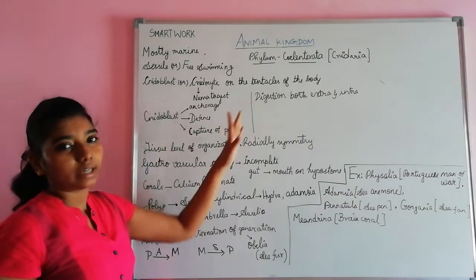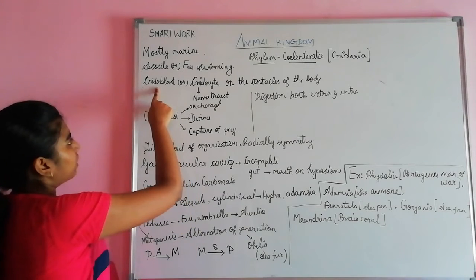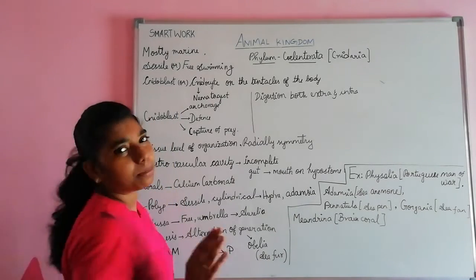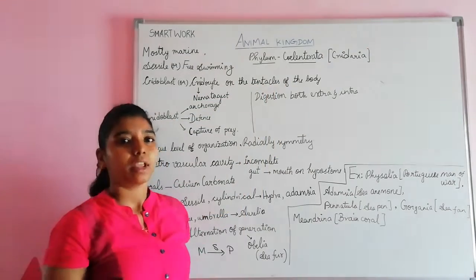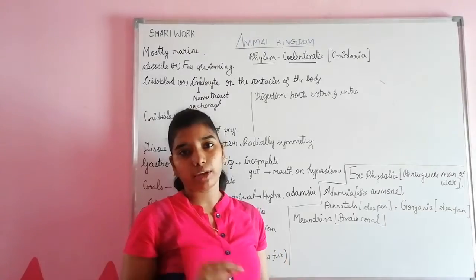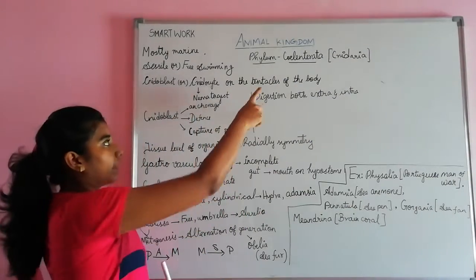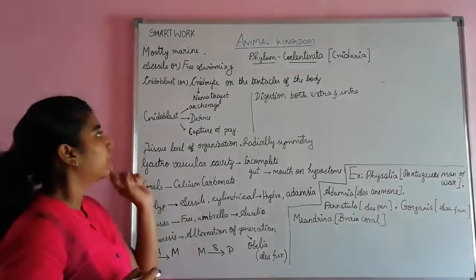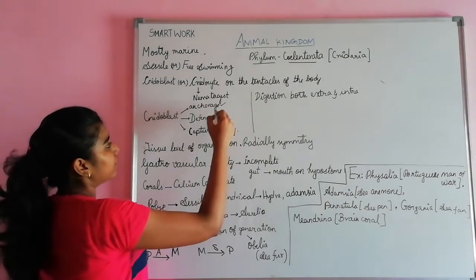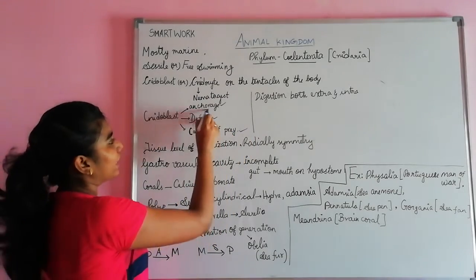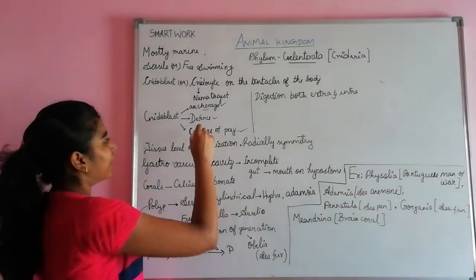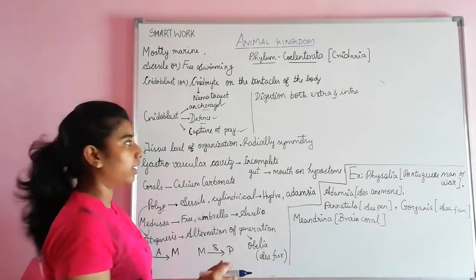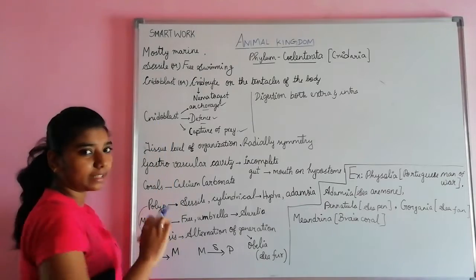Now we are going to see why they are called as Cnidaria. They have a specialized cell called cnidoblast, present on the tentacles of the body. Tentacles are finger-like projections from the body. Cnidoblast has three different functions: anchorage, defense, and capture of prey. Anchorage means support. Defense helps them fight with their enemies. Capture of prey helps them catch food.